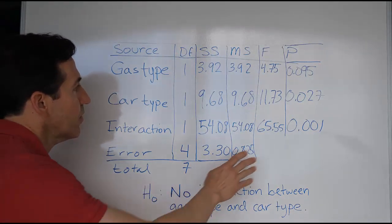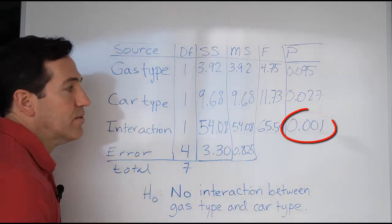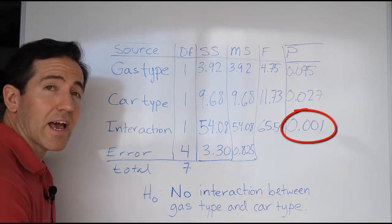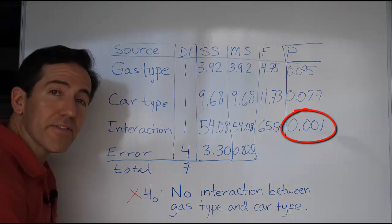Regardless, what we want to pay attention to here is this p-value. The fact that this p-value is so small, because it's less than any alpha we would normally use, we can conclude that we're going to reject this null hypothesis.